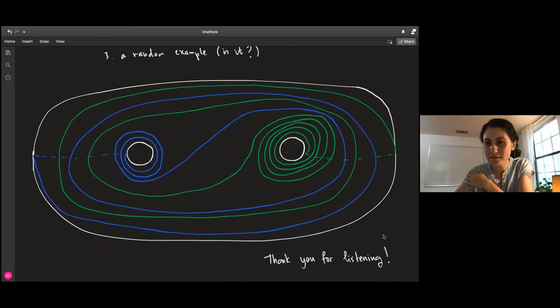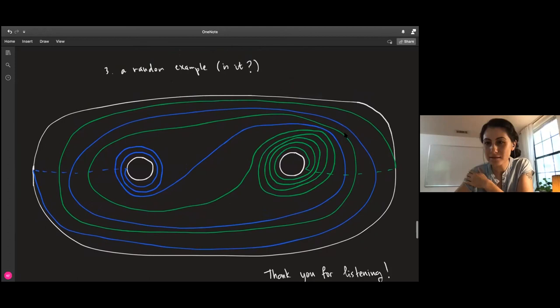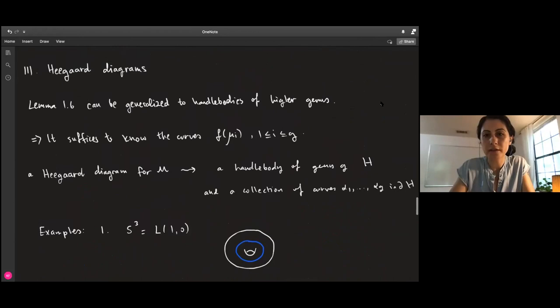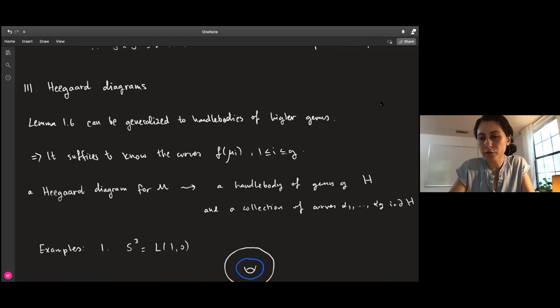In general, you would want two sets of curves to specify where the meridians from each handlebody go on the Heegaard surface. But in these pictures, you're just assuming that these surfaces bound the obvious handlebodies. There are conditions on these curves - they're called characteristic curves. The first thing is they're going to be linearly independent in the homology - they're not going to intersect and they're going to be linearly independent.